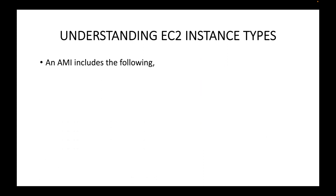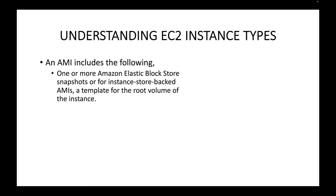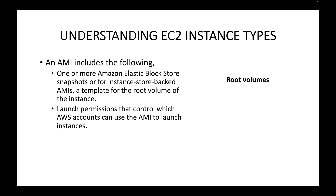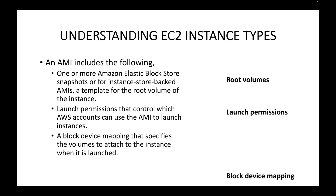An AMI generally includes the following: one or more Amazon Elastic Block Store snapshots, or for instance-store-backed AMIs, a template for the root volume of the instance. It contains the snapshot the AMI needs to use to launch the EC2 instance. It also contains launch permissions — specifying who is allowed to use the AMI to launch instances. You can create a private AMI and share it with only a set of people. It also includes block device mapping, which specifies the volumes to attach to the instance when launched.